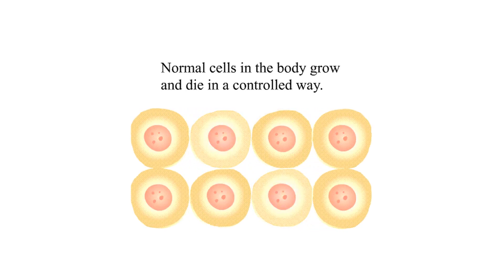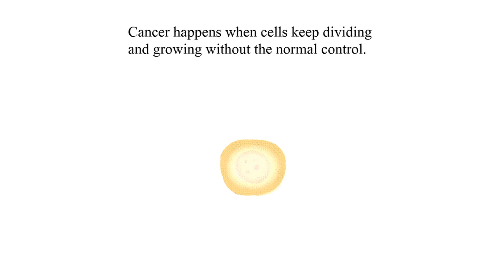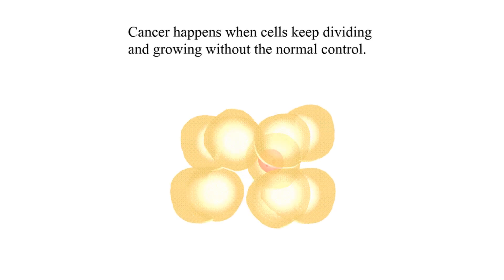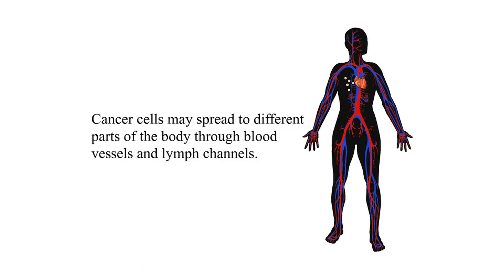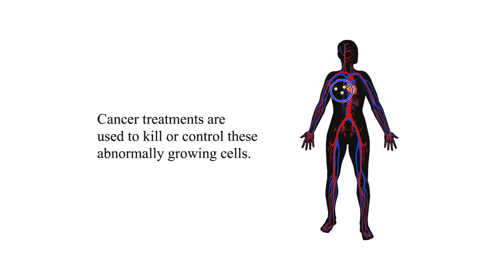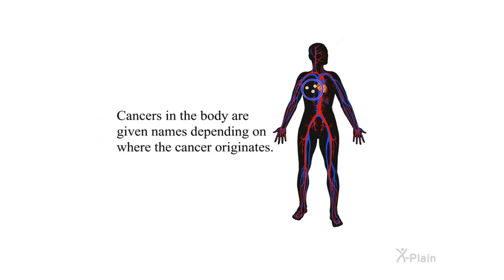Cancer and its causes. The body is made up of very small cells. Normal cells in the body grow and die in a controlled way. Cancer happens when cells keep dividing and growing without the normal control. Cancer cells may spread to different parts of the body through blood vessels and lymph channels. Cancer treatments are used to kill or control these abnormally growing cells.